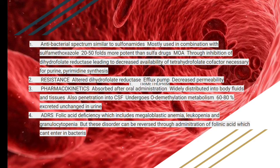Trimethoprim has an antibacterial spectrum similar to the sulfonamides and is mostly used in combination with sulfamethoxazole. It is 20 to 50-fold more potent than the sulfa drugs. Its mechanism of action is through inhibition of dihydrofolate reductase, leading to decreased availability of the tetrahydrofolate cofactor necessary for purine and pyrimidine synthesis — the precursors of DNA and RNA.